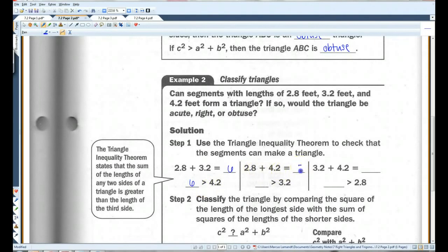If you add these together, you get 7. 7 is bigger than 3.2. Add these together, 7.4. The reason we're doing this, the triangle inequality theorem states that the sum of any two sides of a triangle have to be bigger than the third side.